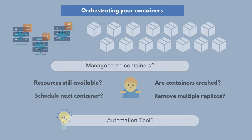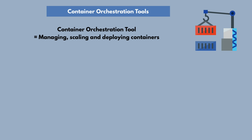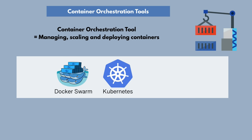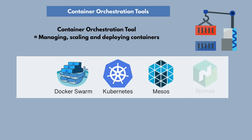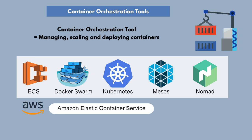All these things I just mentioned are features of a container orchestration tool. You probably already know Kubernetes, which is the most popular orchestration tool. But there are multiple orchestration tools out there — Docker Swarm is one of them, for less complex and smaller containerized applications. You also have Apache Mesos, HashiCorp Nomad, and an AWS service called Amazon Elastic Container Service, ECS. So ECS is one of the container services that AWS offers.